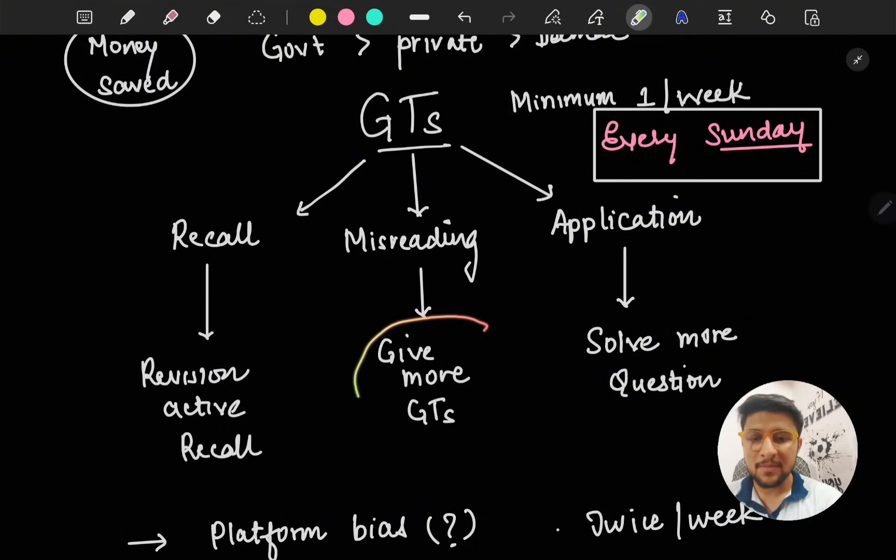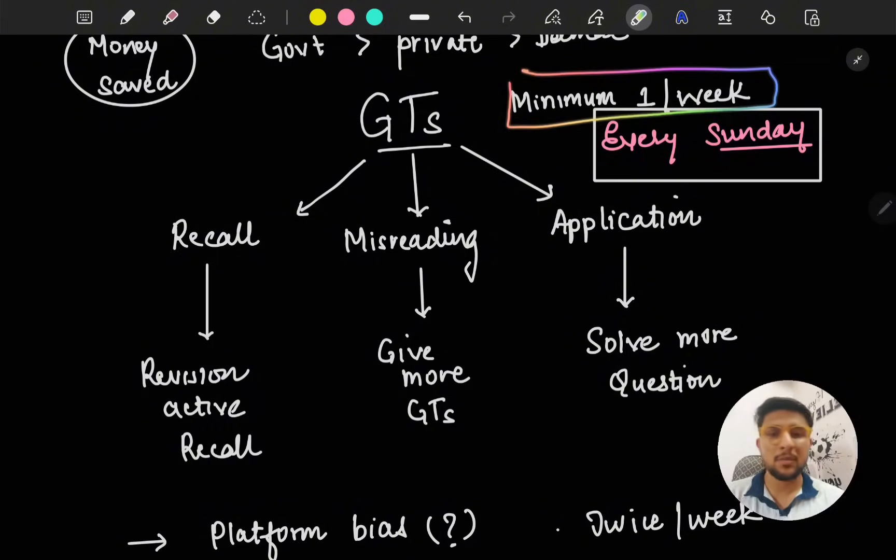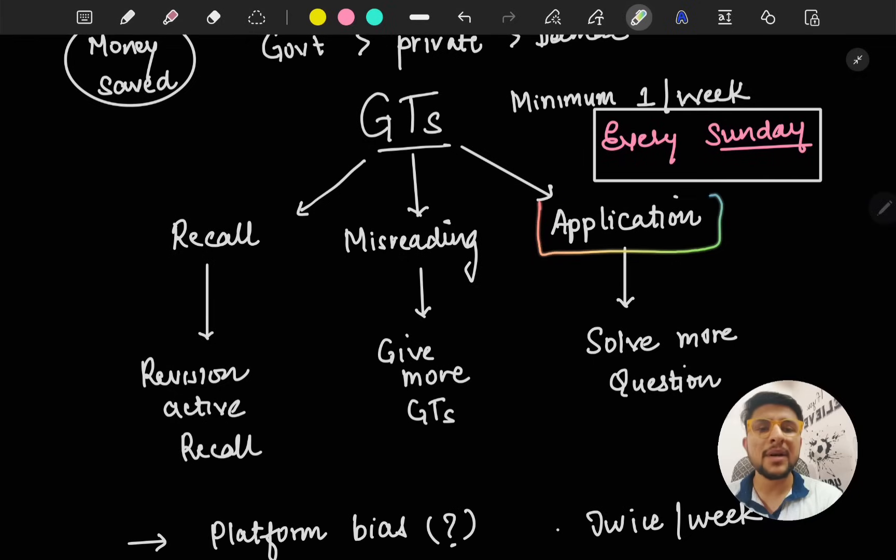To improve on misreading, give more GTs. Every Sunday you should be giving a GT, irrespective of what phase you're in. In the last two months, every Sunday 9 to 12, you have to sit for a GT no matter what phase of preparation you're at. Minimum one GT - I know people have different opinions, but my opinion is you should be giving one GT every single week.